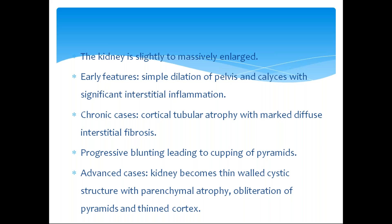The kidney is slightly to massively enlarged. Features include simple dilation of the pelvis and calyces with significant interstitial inflammation. In chronic cases, cortical tubular atrophy with marked interstitial fibrosis leads to decreased concentrating ability and decreased GFR, finally leading to cortical atrophy. Progressive blunting leads to cupping of pyramids. In advanced cases, the kidney becomes a thin-walled cystic structure with parenchymal atrophy, obliteration of pyramids, and thinned-out cortex.